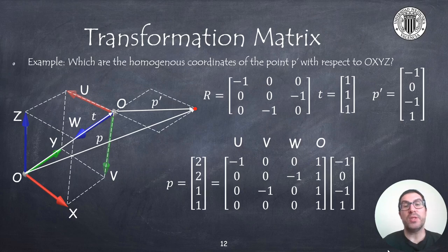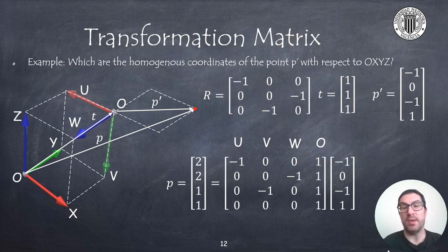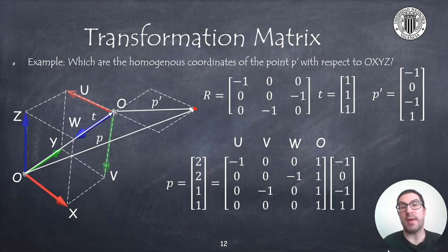To conclude this part of the presentation, we can see an example in which we have two reference frames: the fixed frame OXYZ and the mobile frame OUVW that has been rotated and then moved. Based on this transformation, we can compute the coordinates of a point P with respect to the fixed frame OXYZ if we know the coordinates of the point P' with respect to the mobile frame OUVW. As you can see, the maths are again the same — very simple.